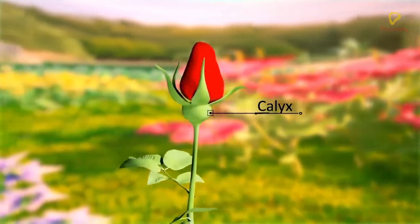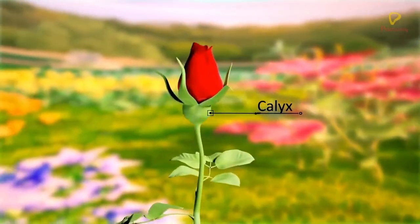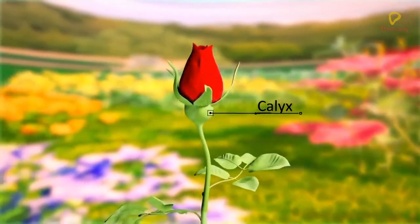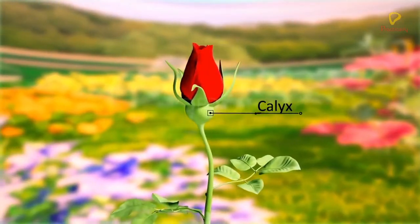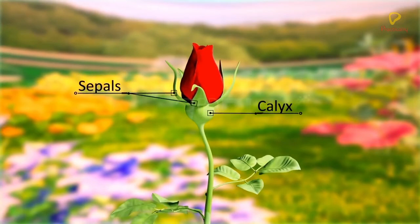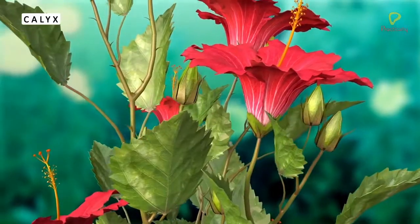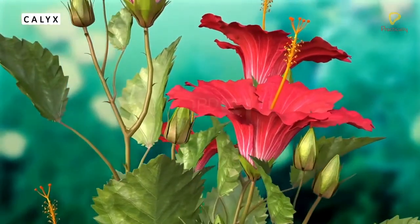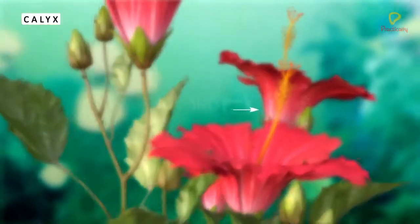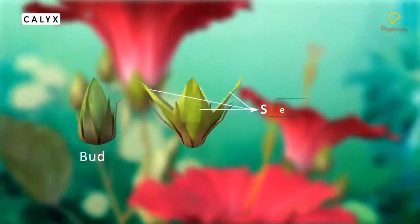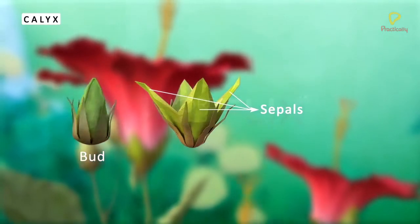Calyx is the outermost whorl of the flower. The members of the calyx are called sepals. Generally, sepals are green, leaf-like, and protect the flower in the bud stage.